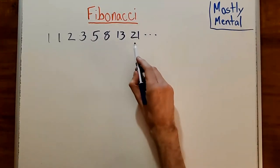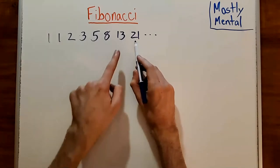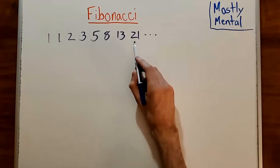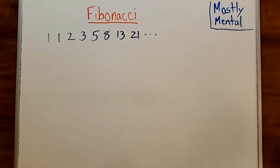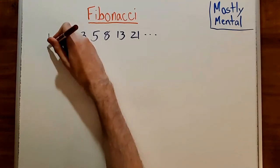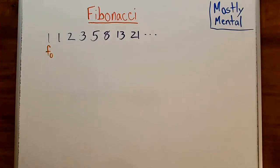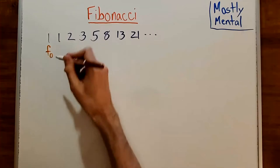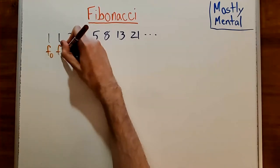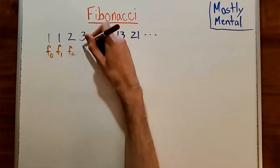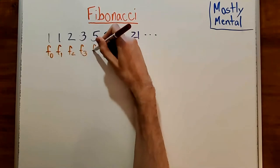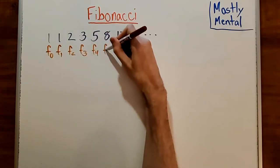Where each of these numbers is the sum of the 2 before it. And we're going to label these numbers with an F followed by a little subscript here. And for reasons that will become clear in a moment, we're going to start with 0. And so the rest of these are F1, F2, F3, F4, and so on.